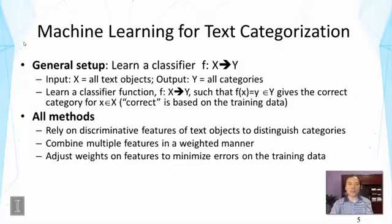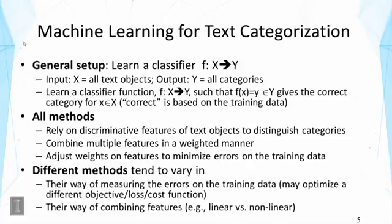In general, all methods rely on discriminative features of text objects to distinguish different categories. These features must be provided by humans. Methods also combine multiple features in a weighted manner, with weights optimized to minimize errors on training data. The learning process is essentially an optimization problem where the objective function is tied to training errors — also called the loss function or cost function. Methods vary in how they measure errors and how they combine features: linear combination is simple but less powerful, while non-linear models are more expressive but complex to train.